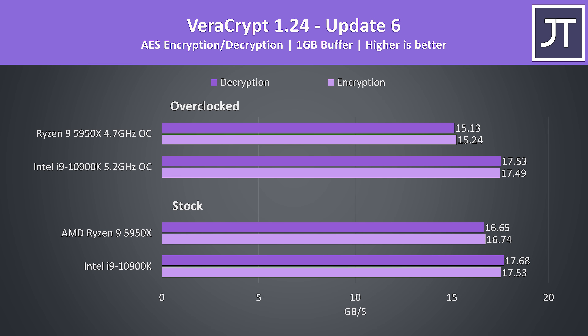VeraCrypt was used to test AES encryption and decryption speeds, and it's a bit of a weird one that often seems to favor Intel options, which was the case here — this was the only test where the 5950X was behind the 10900K. Additionally, the 5950X seems to behave negatively in this test when overclocked, and the same for the i9, but the dip is lower.